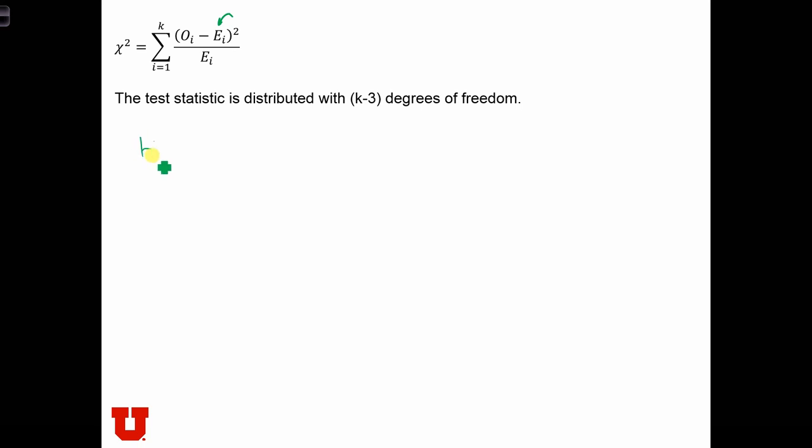Now, let's do the formal steps again. The null hypothesis is that the data are normally distributed. The alternative is just that they're not normally distributed.